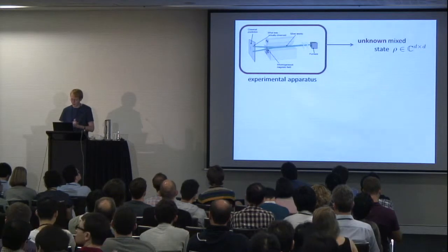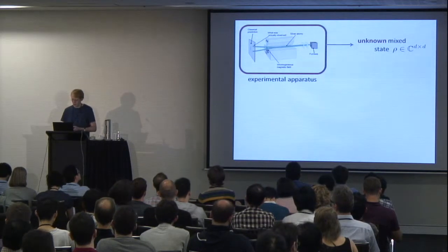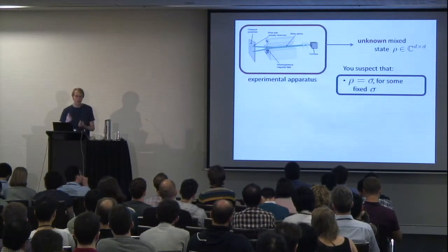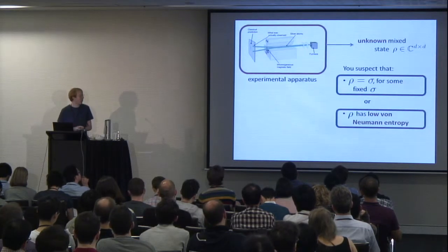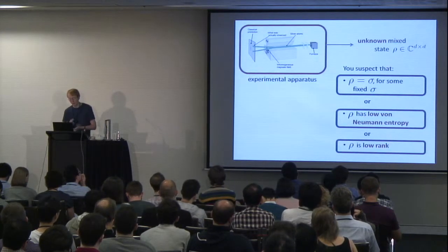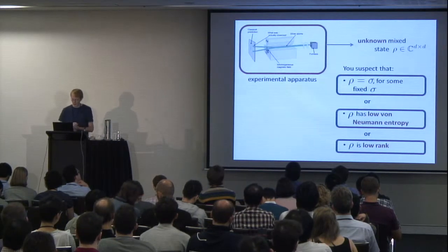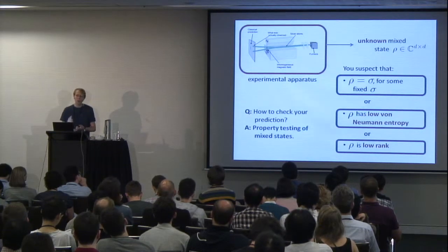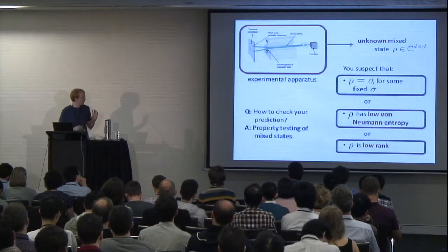You'd like to figure out what this experimental apparatus does. Maybe you've done some sort of theoretical guesswork and have some intuition about what rho either is or what properties it might have. For example, you might suspect that rho equals sigma for some fixed known sigma — maybe you actually think you know what mixed state is output by your apparatus. Or maybe you suspect rho has low von Neumann entropy, or maybe that it has low rank.